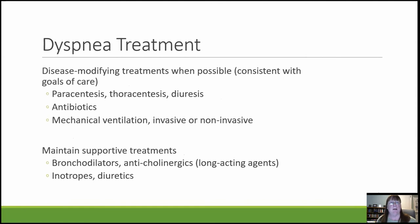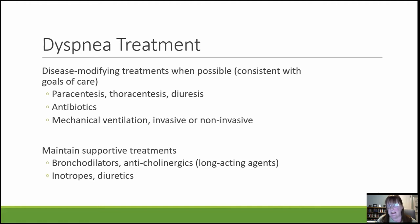Now let's talk about dyspnea treatment. Treatment begins with identifying any disease-modifying treatments consistent with goals of care and nearness to death. Draining ascites, tapping a pleural effusion, diuresing for heart failure, or treating infection can all reduce dyspnea. The most reliable way to treat dyspnea from breathing failure is mechanical ventilation, though that may not be goal-concordant given its burdens. For patients with chronic dyspnea from COPD or heart failure, maintaining their supportive treatments until the patient is unconscious and very close to passing is a good standard to consider.